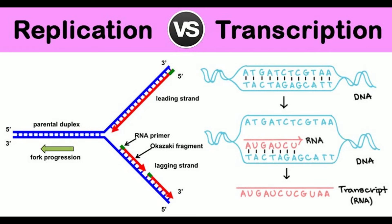13. Copying of template: The entire template strand is copied in replication. Only the portion of the template DNA that codes for required genes is transcribed or copied.